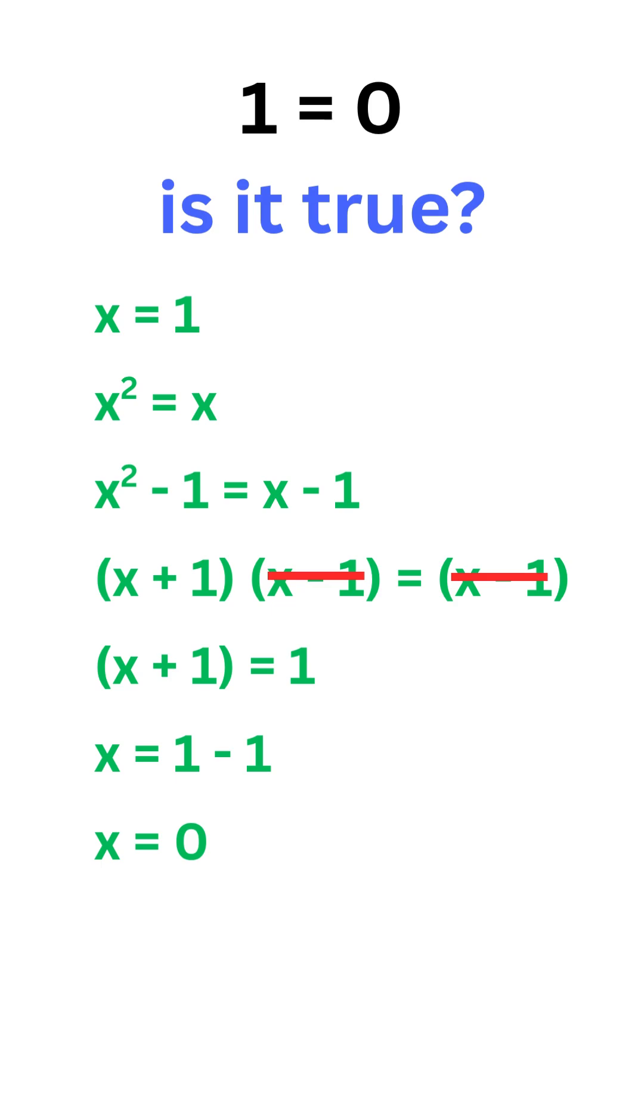What? We started with x equals 1, but we ended up with x equals 0. That means 1 equals 0. Can it be true?